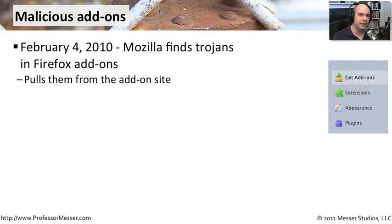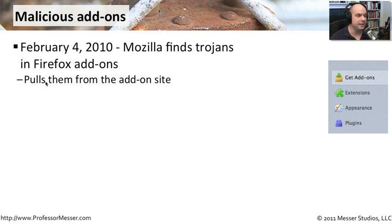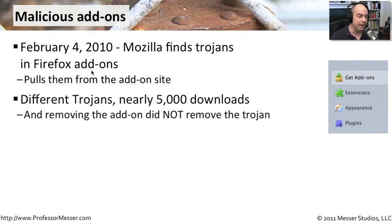These worries are not completely unfounded. On February 4th, 2010, Mozilla — the developer of Firefox — found Trojans in two separate Firefox add-ons. And these were ones you could install by doing exactly what we just did: go to the add-on site, click a button, and now it's on your computer. Inside of that was malware — a Trojan trying to get you to install it. There were nearly 5,000 downloads across two different Trojans — they weren't even the same one.